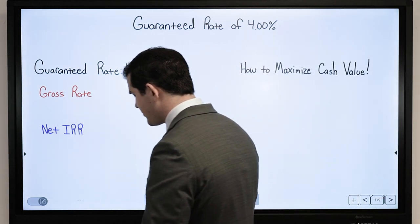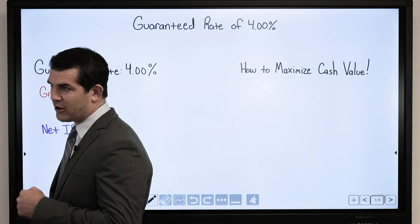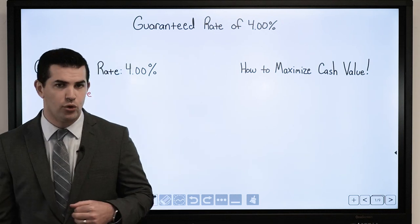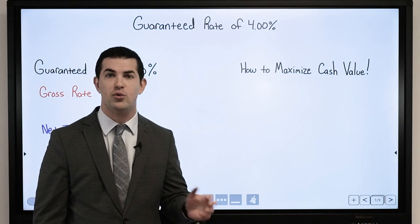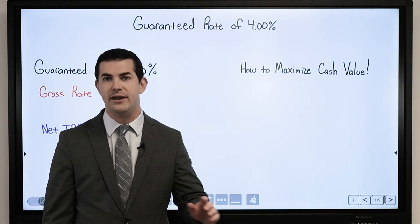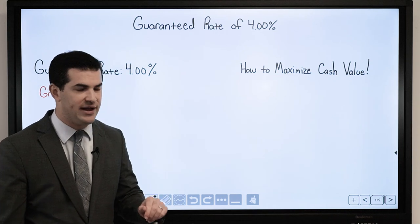So if I'm looking at a guaranteed rate or a current dividend rate, whatever it might be, how do I maximize cash value?